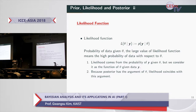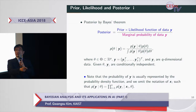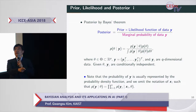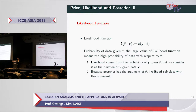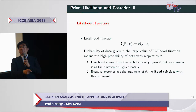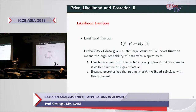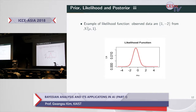The likelihood is called the likelihood function because in the posterior formulation, the posterior has theta as its argument. So this term should be interpreted as a function of theta. The meaning of the likelihood function is: as theta can vary, a large value of likelihood means a high probability of data with respect to theta. The next slide shows an example of the likelihood function.